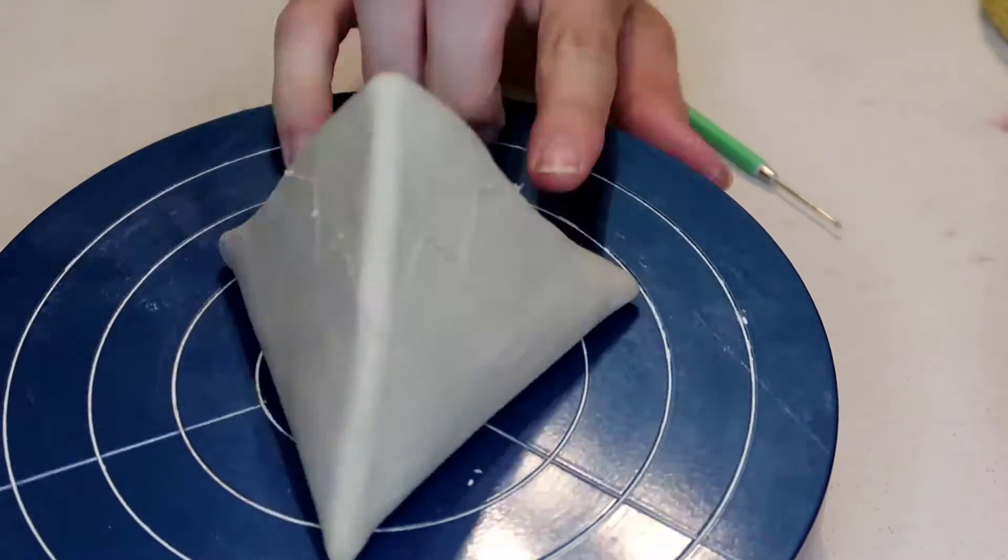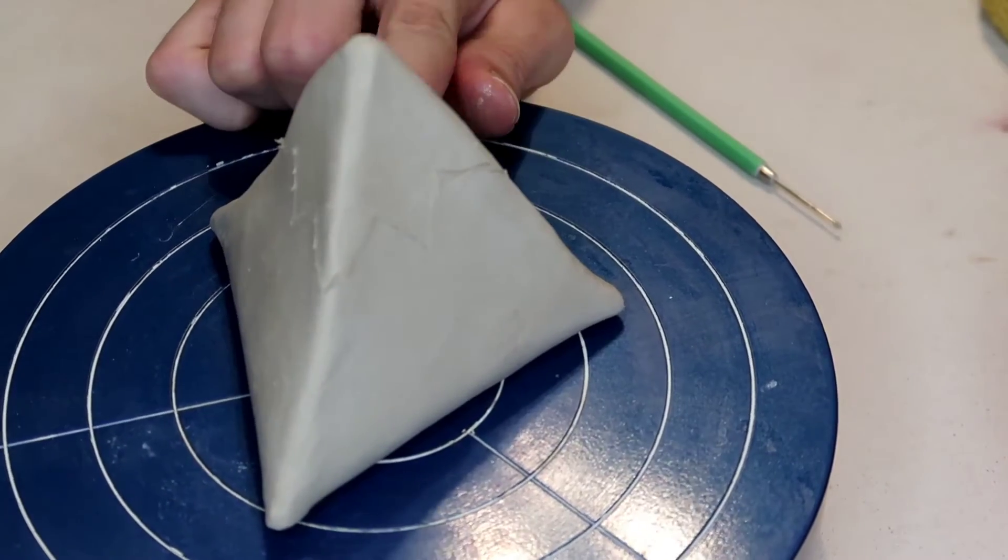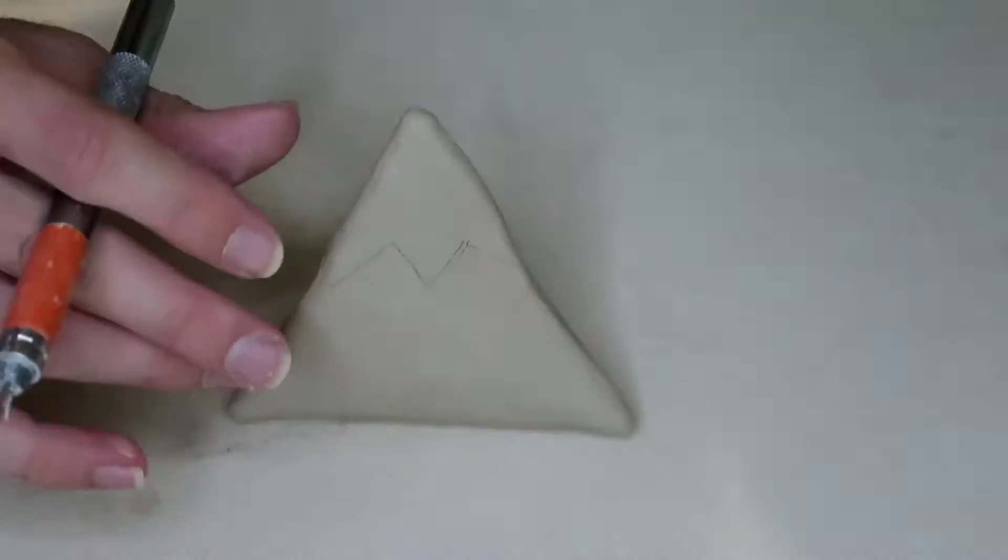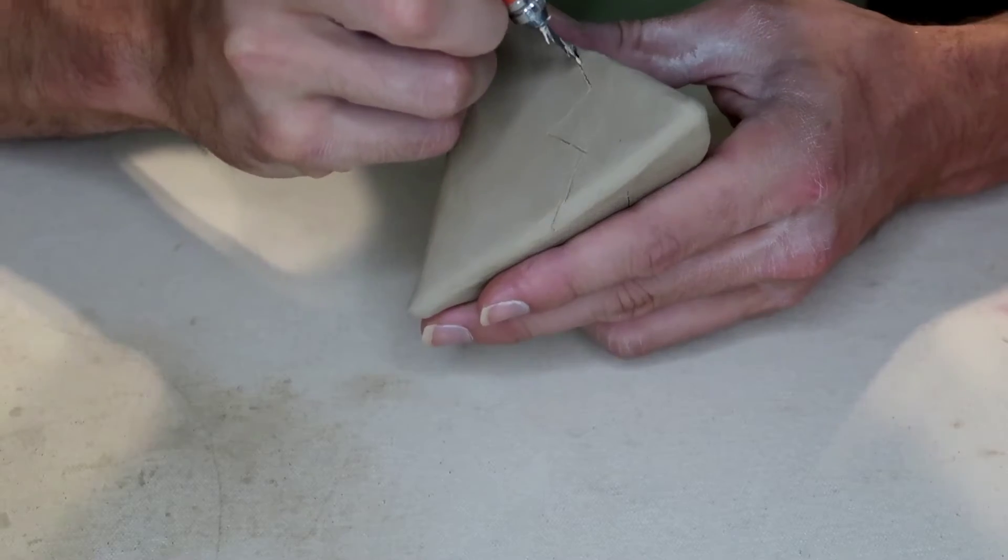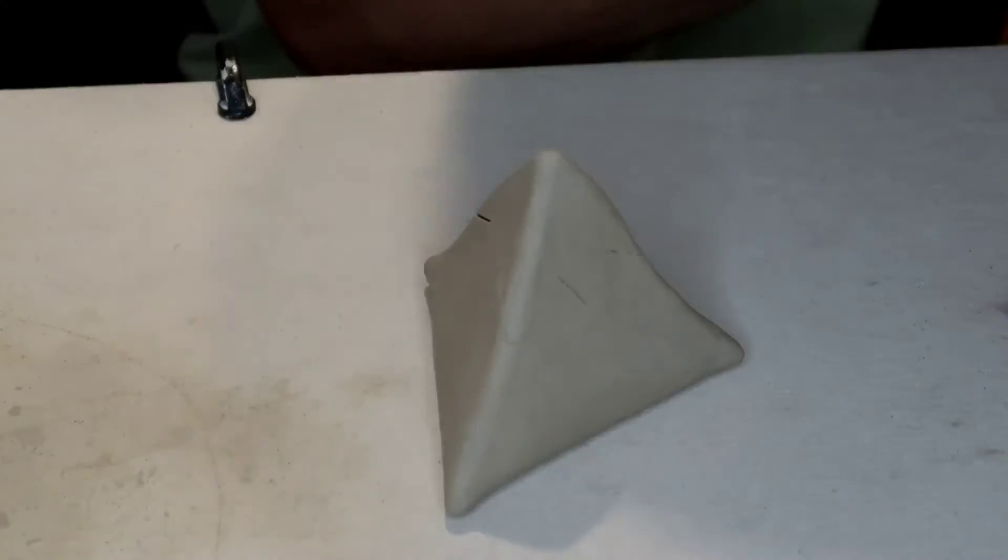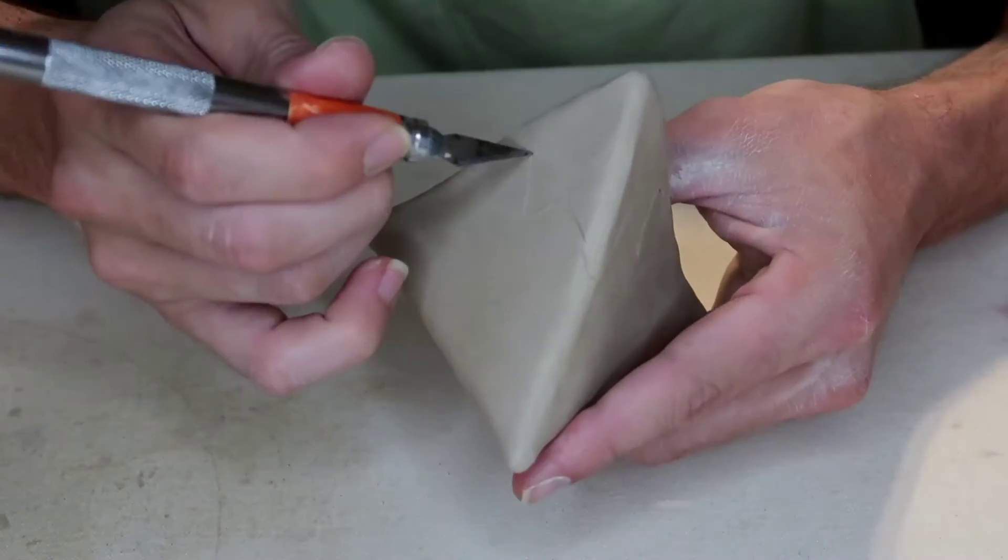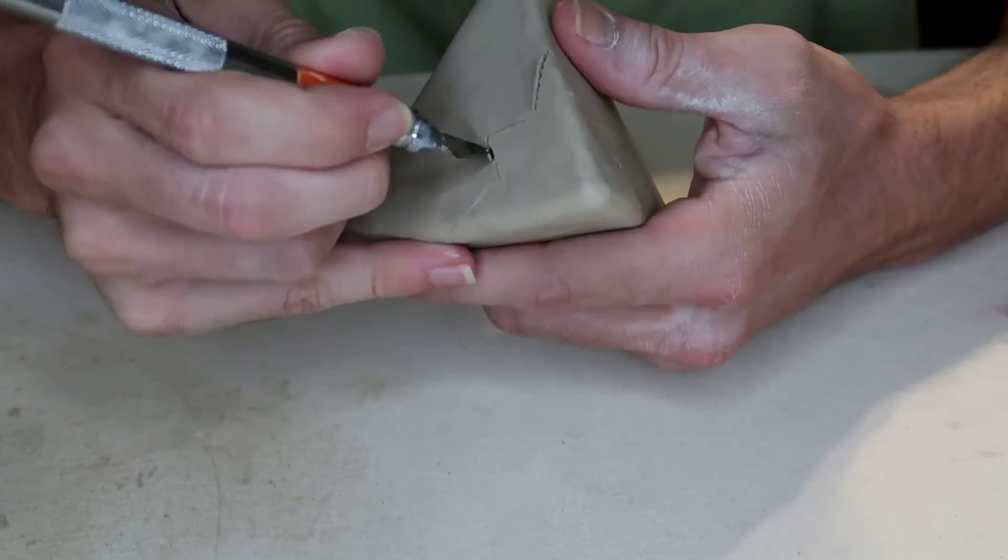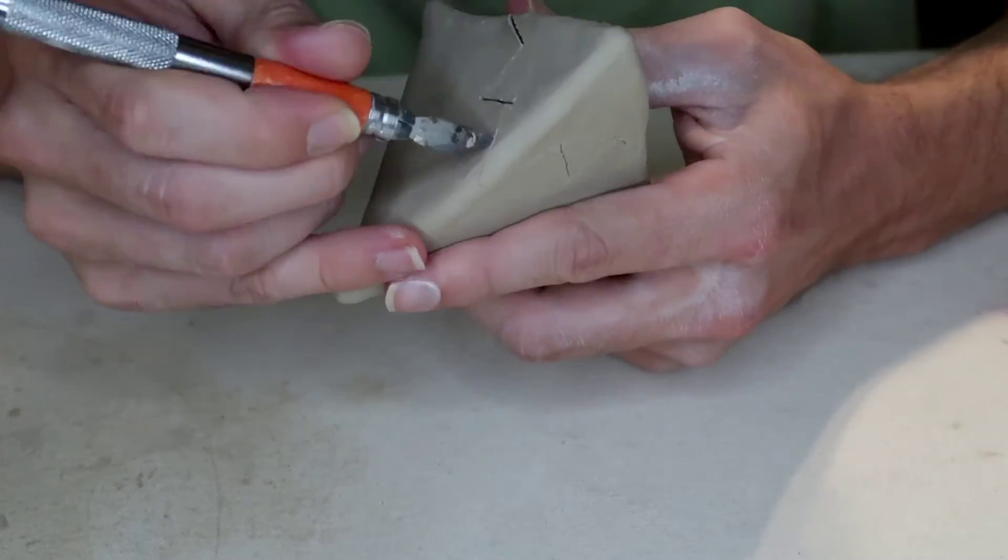Now that you've got your design traced out, we're going to start cutting the top off. I'm going to use an exacto knife and try to be careful not to cut close to your hand. Think about each pass you're taking. In here I kind of saw back and forth to help me stay in the line.